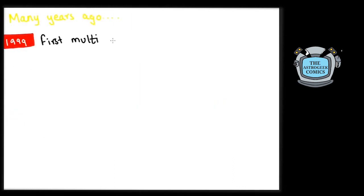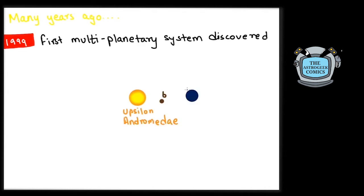In 1999, we discovered our first multi-planetary system when two more planets were discovered around Epsilon Eridani.